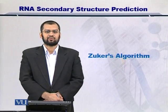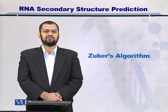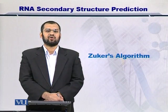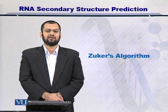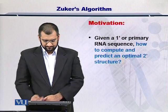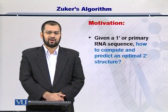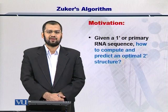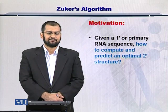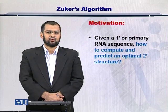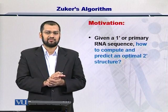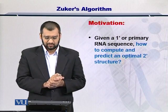In this module, we will look at one of the seminal algorithms developed to determine the stability of the secondary RNA structures. It is called the Zucker's algorithm. Given a primary structure of an RNA molecule, you would like to predict the secondary structure. For that, you would want to evaluate the overall stability of the molecule. Zucker's algorithm helps you to do that in a very simple way.